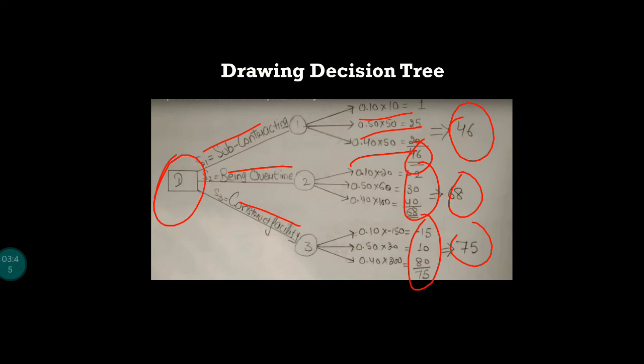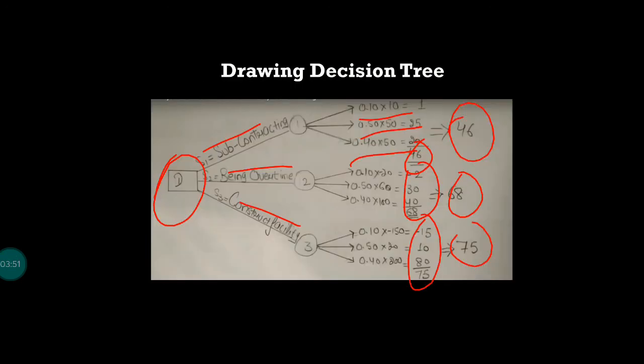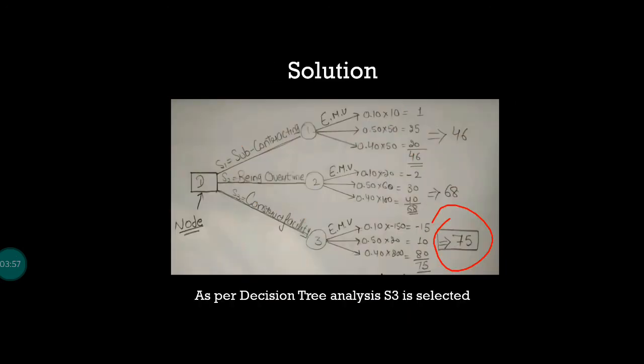Then you have the chance node with three chances, and you write down the different events - the EMVs in numbers. Finally, you take the number which has the maximum value. The maximum value is 75, coming under S3. So as per the decision tree analysis, strategy three - constructing a facility - is being selected.